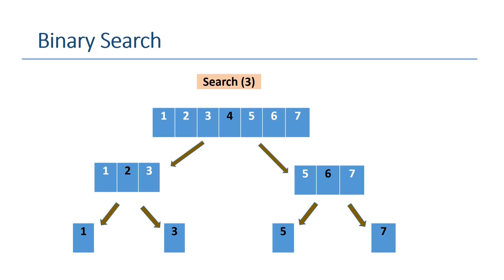Briefly, binary search tries to find an item from a sorted array by repeatedly dividing the array into halves until the solution is found. As you can see here, we have an array of 7 items. The algorithm looks into the middle of the array only. In this case, it is 4. Then it can be either 2 or 6, depends on the item you are looking for, and so on.